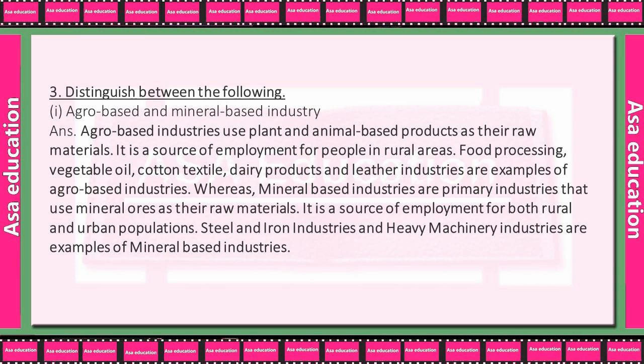Distinguish between agro-based and mineral-based industries. Agro-based industries use plant and animal-based products as their raw materials and are a source of employment for people in rural areas. Examples of agro-based industries include food processing, vegetable oil, cotton textiles, dairy products, and leather industries.